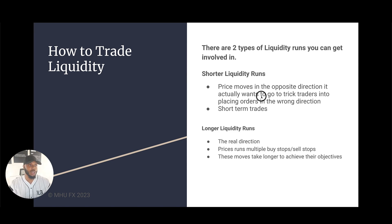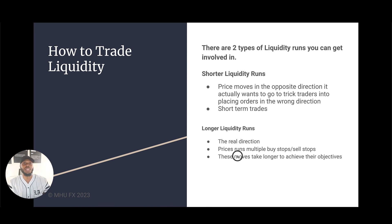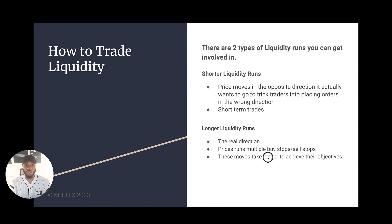Then there's the longer liquidity runs — this is the one I love to get involved in. This is the real direction where price is going. Price runs multiple buy stops if you're bullish, or multiple sell stops if you're bearish. These moves tend to take a lot longer to achieve their objective. You might be in this for the whole day, or a couple of hours, and you might have to endure one or two retracements before getting to the destination. These longer liquidity runs are my bread and butter.